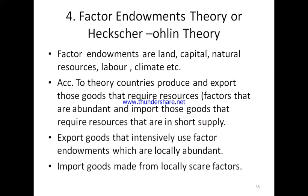We are going to study the fourth theory of international trade, that is Factor Endowment Theory. It is also known as the Heckscher-Ohlin theory, given by Mr. Olin, a Swedish economist. In this theory, factor endowment means the gift — things that nature has given us abundantly in our country.